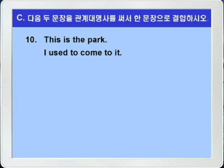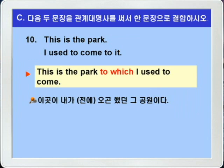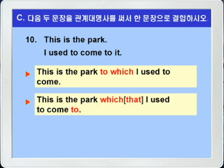10번입니다. This is the park. I used to come to it. 이곳이 그 공원이다. 나는 이전에 그곳에 오곤 했다. 두 문장에서 공통되는 것이 the park하고 it이죠. 따라서 the park을 선행사로 하면 되는데 park이 사물이니까 목적격 관계대명사 which를 사용해서 to which로 만든 다음에 연결시키면 됩니다. 주의할 점은 which 대신에 that을 써서 to that 이런 식으로 하면 틀립니다. This is the park to which I used to come. 전치사를 뒤로 보내면 This is the park which 혹은 that I used to come to.